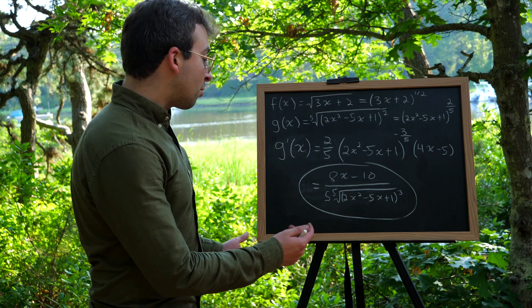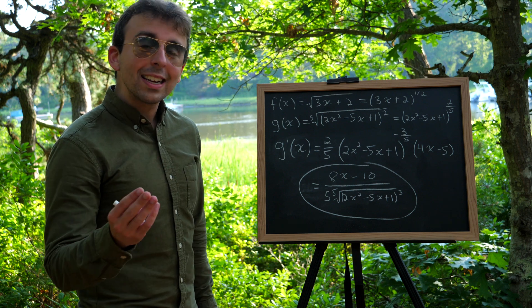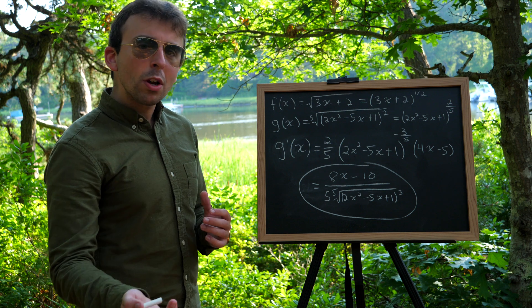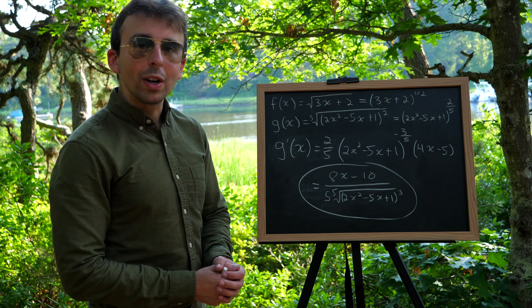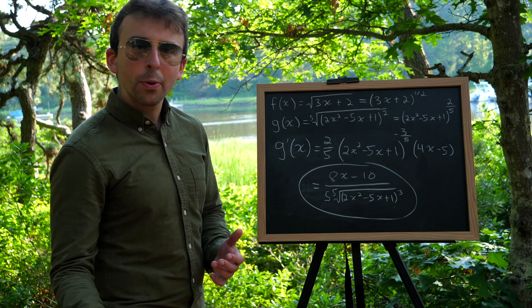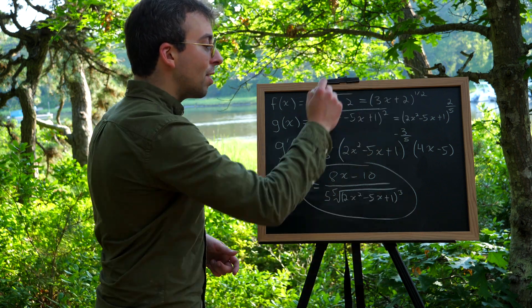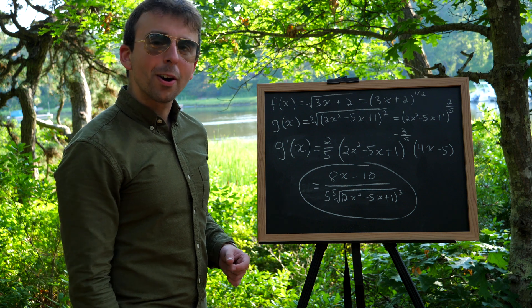And that's really all there is to it. When you're using the chain rule with these radical functions, you just want to make sure that you rewrite them with a rational exponent. And then it's pretty straightforward. You use the power rule and then you multiply by the derivative of the inside function. That's how it works.